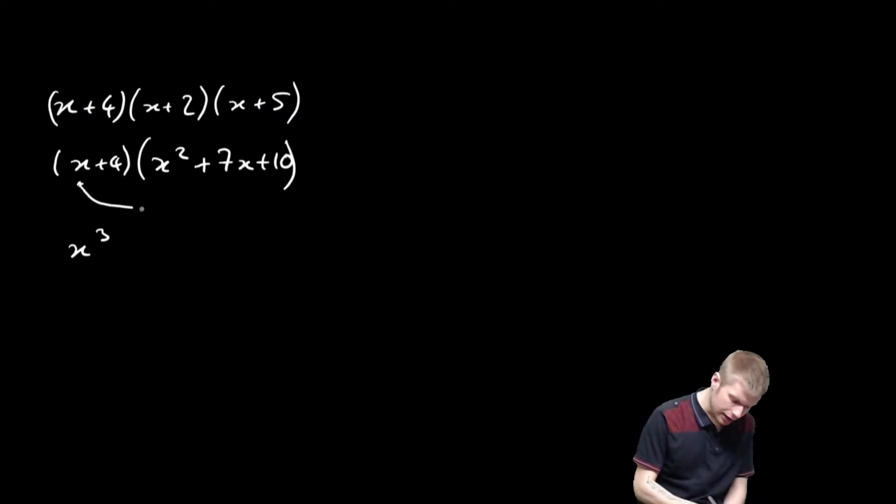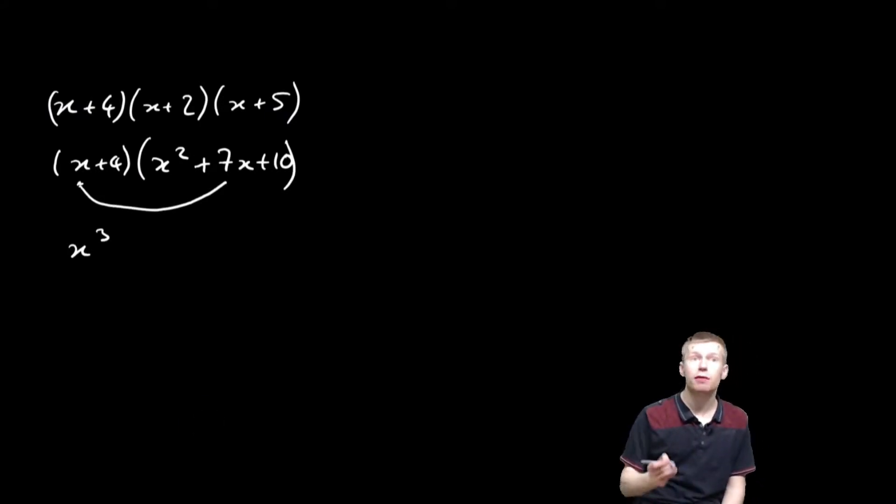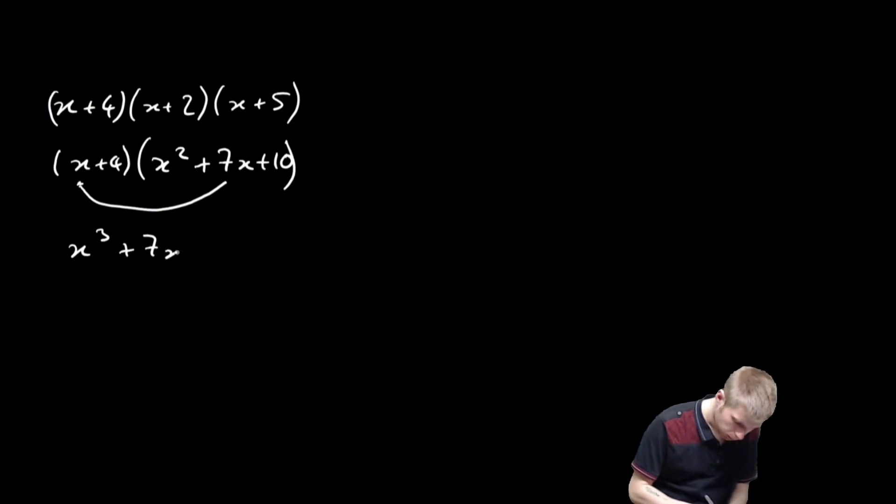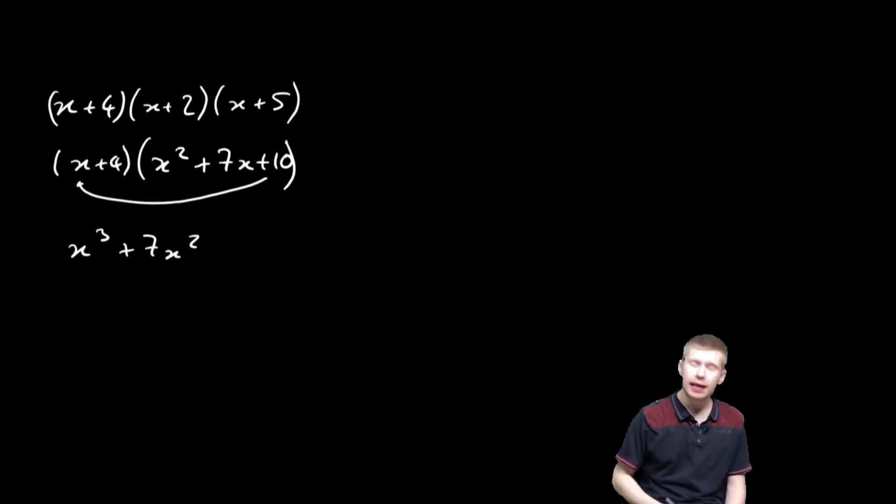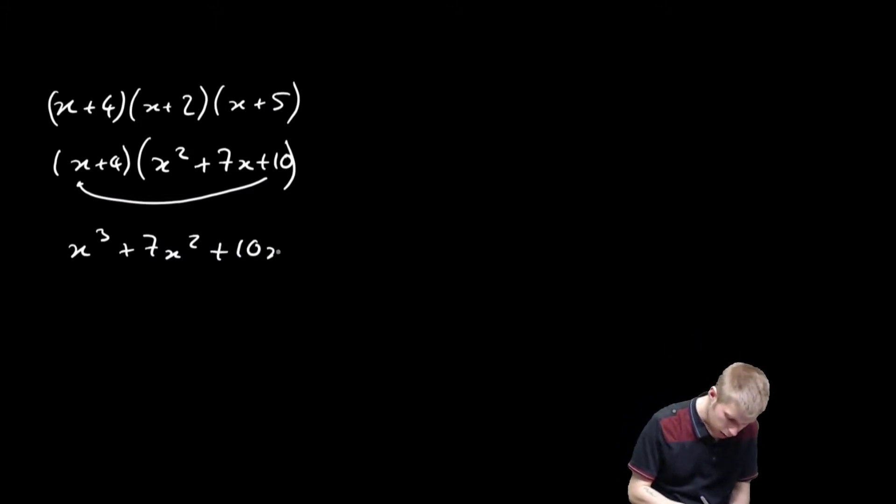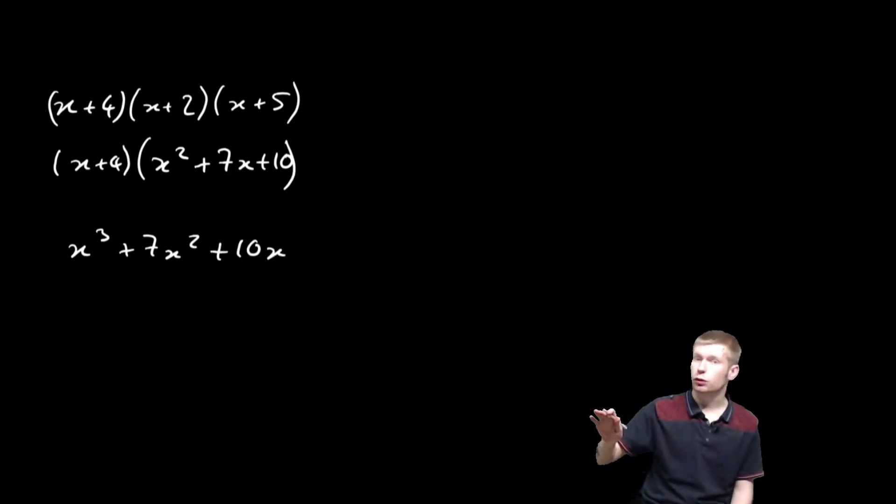And then I'm going to do my x times my 7x, which is going to give me 7x². And then I'm finally going to do x times the last thing in my second bracket, which is x times 10. So it's going to be 10x. That's the x sorted.